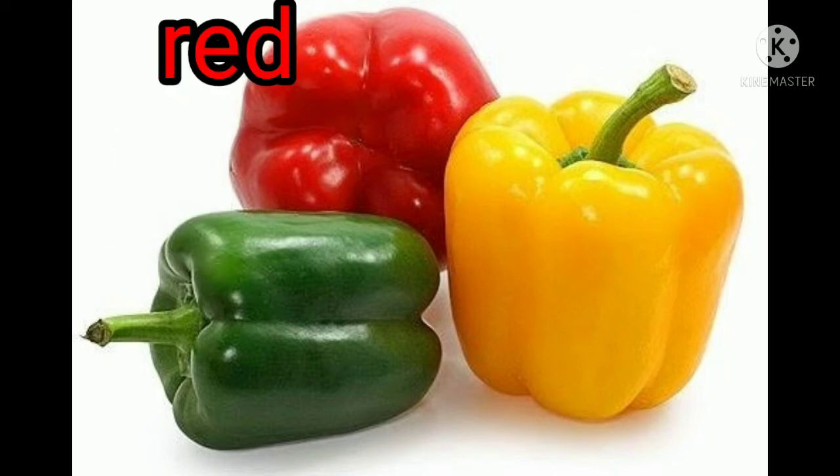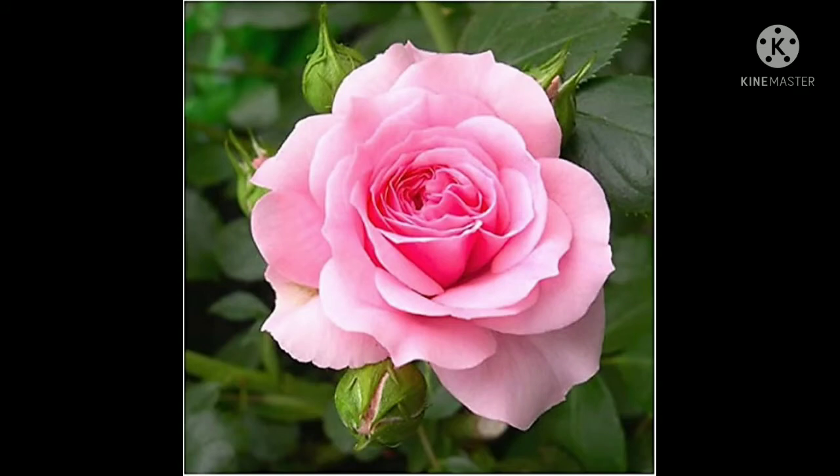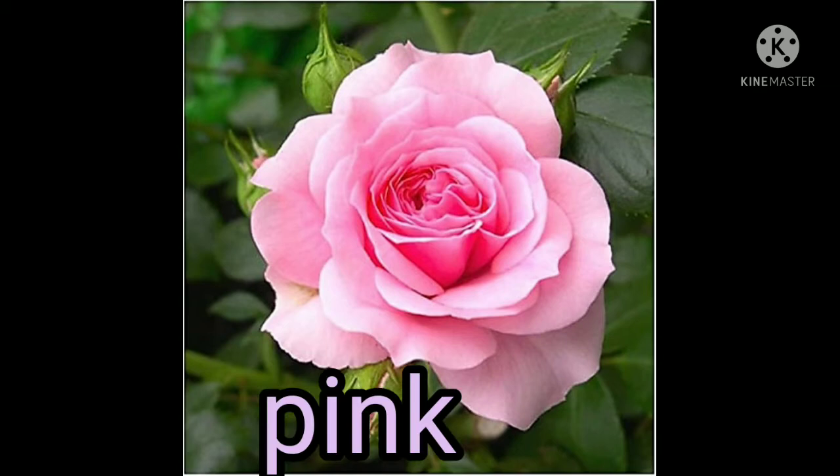Now, children, look at the next picture. What do you see? Which flower can you see here? You can see a rose, right? This is a rose flower. So, tell me, children, what is the color of this rose? The color of this flower is pink, right? So, you can see a pink rose.